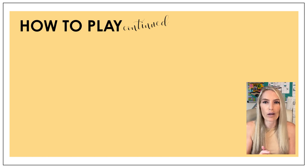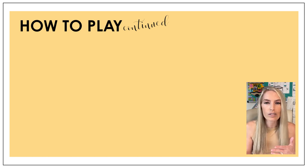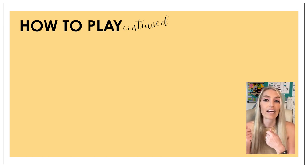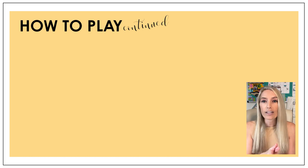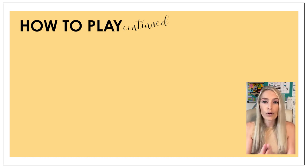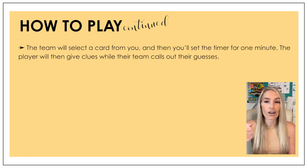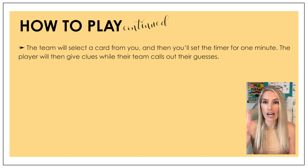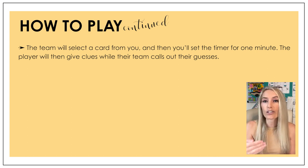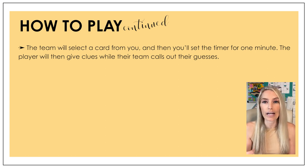Once teams have filled out all of their cards with the outlawed words, they will hand them into you. You will then choose a team and a clue giver to go first. The team will select a card from you, and then you'll set the timer for one minute. The player will then give clues while their team calls out their guesses.